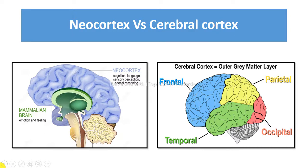Neocortex contains six horizontal layers, whereas cerebral cortex contains only three layers. Neocortex is an evolutionarily more recent and advanced structure, whereas allocortex is a less evolved structure.